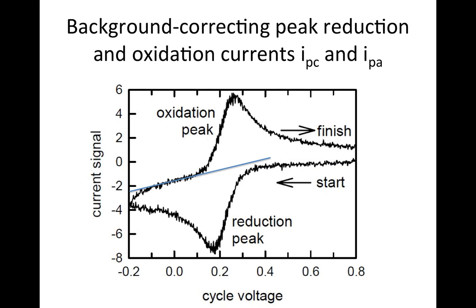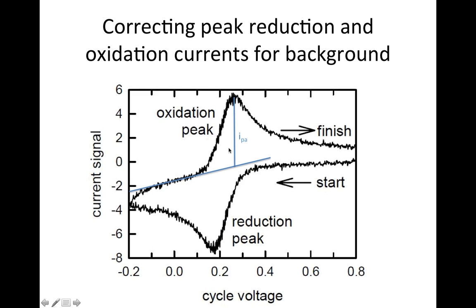For the oxidation current, the baseline correction is even more dramatic. You draw your best straight line through the data obtained before that peak starts coming out, and the uncertainty in where to draw that line gives you some uncertainty in I_PA. In any case, you draw a straight line through that background current, measure the distance from that line to the peak, and that gives you your peak oxidation current, I_PA.